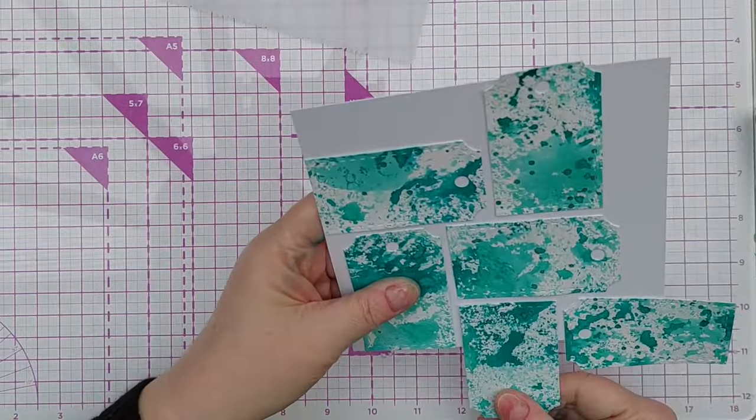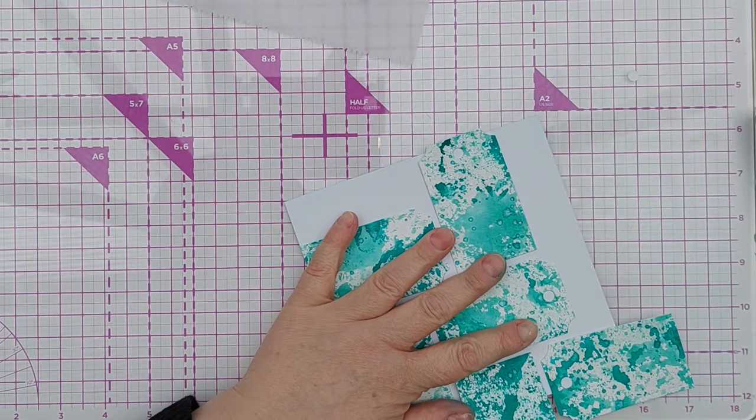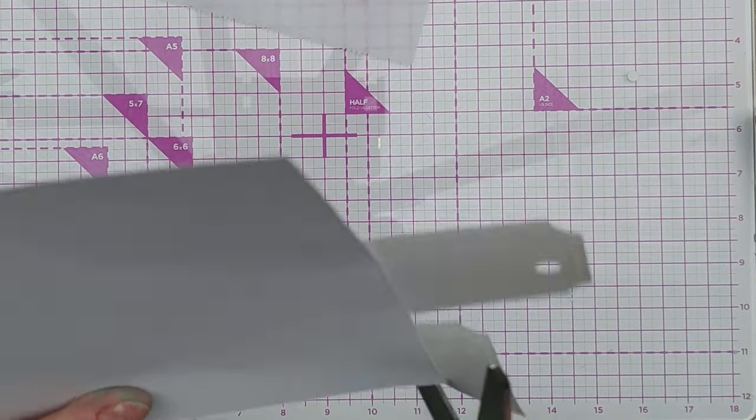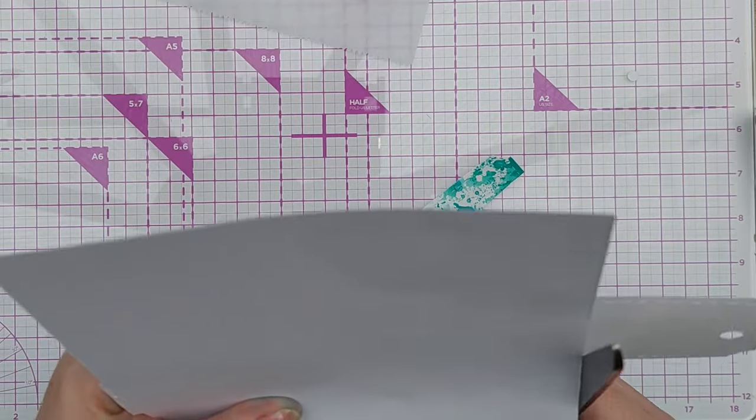Once I'd glued all six tags down, I used some scissors to cut off the overhanging bits and then I added them back onto the paper to fill it up as much as I possibly could.